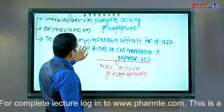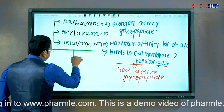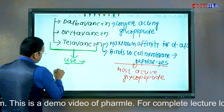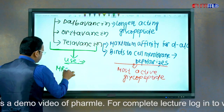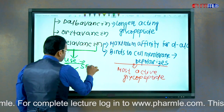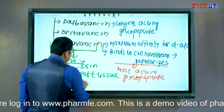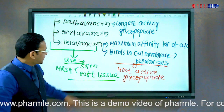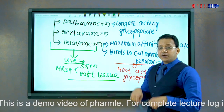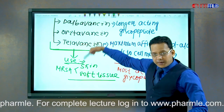These newer glycopeptides have common uses. They are used for treatment of MRSA, and as of now they are FDA-approved only for MRSA infection of the skin and soft tissue. For systemic infections, the only FDA-approved glycopeptide is vancomycin.